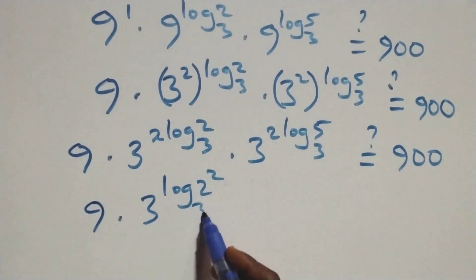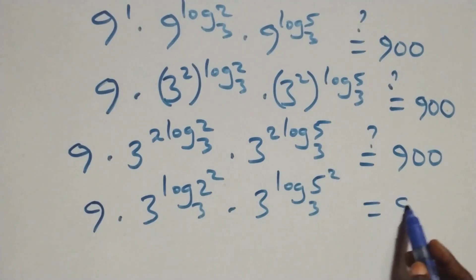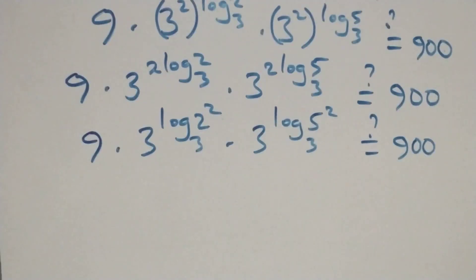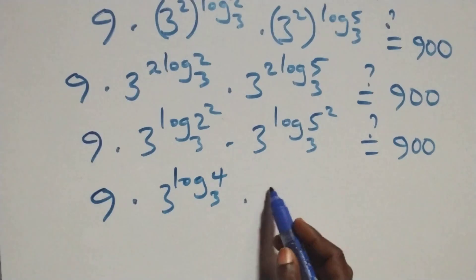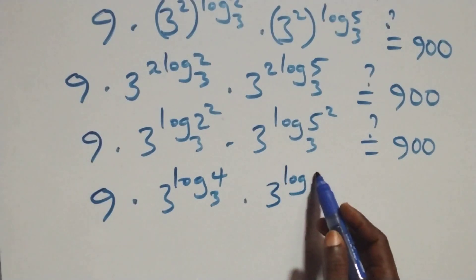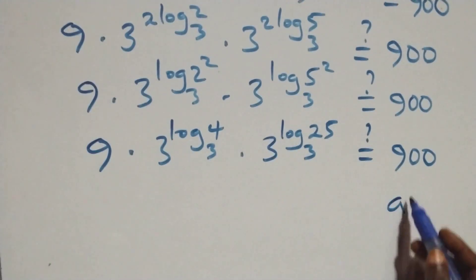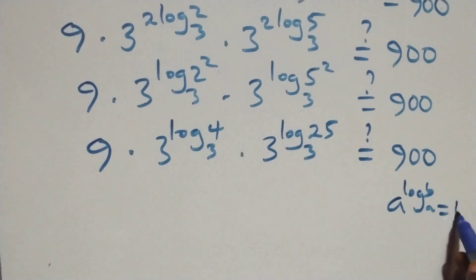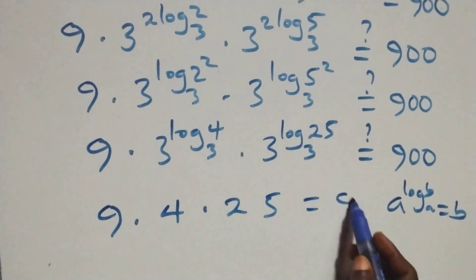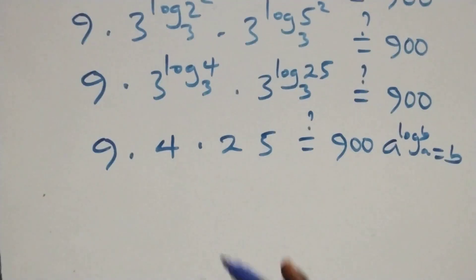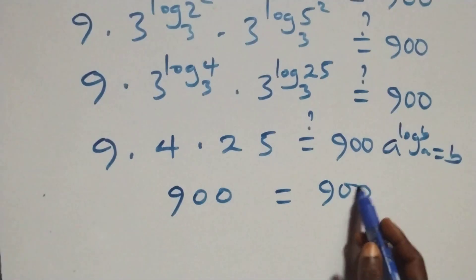We have 9 times 3 raised to power log base 3 of 2² — since 2² equals 4 — times 3 raised to power log base 3 of 5² — since 5² equals 25. When we have a raised to the power log base a of b, this is the same as b. So we have 9 times 4 times 25, which equals 900. Here 4 times 25 is 100, and 100 times 9 is 900 — equals 900 on the right-hand side.